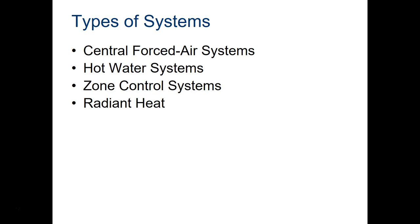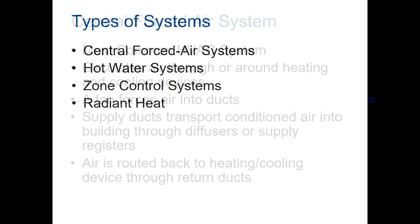Other popular systems — some of them are a little older and some are for different uses — include a hot water system, a zone control system where the zone is an individual part of a bigger system, and radiant heat, which we'll also talk about.